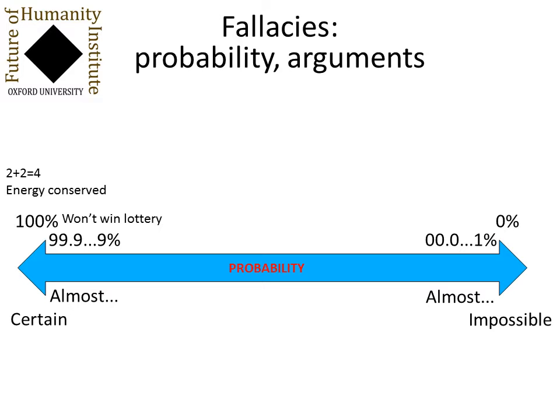What things are impossible? Well, it's entirely symmetric. If something is certain or almost certain, its negation is impossible or almost impossible. And then we have the range in the middle — from, say, 65 to 35 percent — of things that could really go either way.